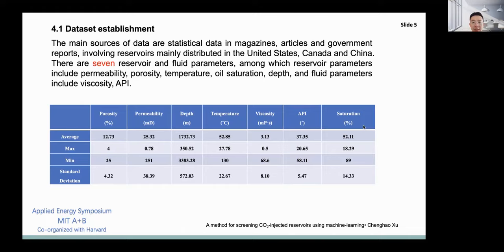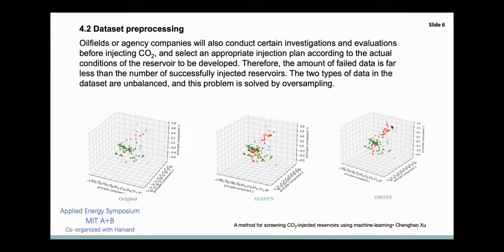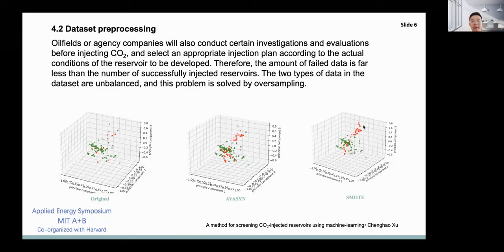The results given by the data source are divided into two categories: those that fail after injection and those that succeed after injection. The main factor in measuring success or failure is production or recovery. After a long period of development, carbon dioxide has established certain screening criteria. Oil fields or injection companies will also conduct certain investigations and evaluations before injecting carbon dioxide and select appropriate injection schemes according to the actual conditions of the reservoir to be developed.